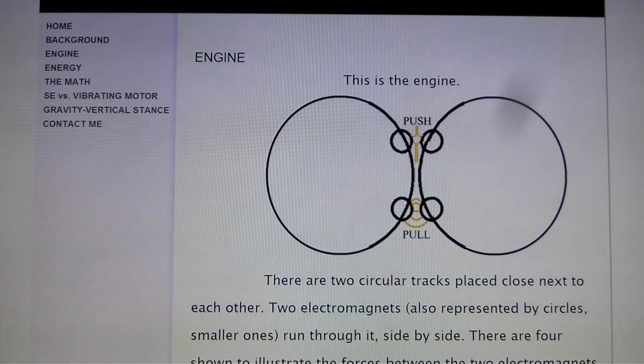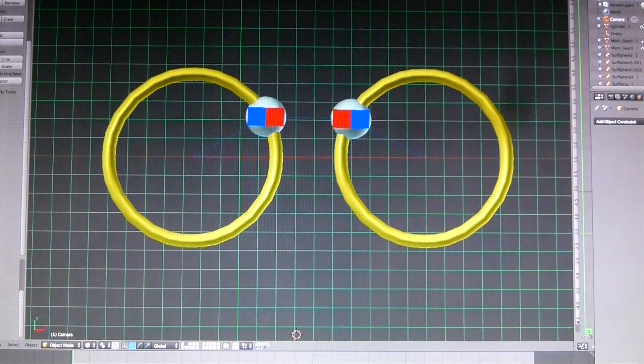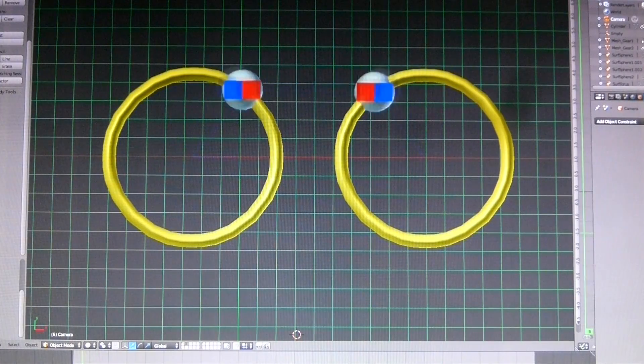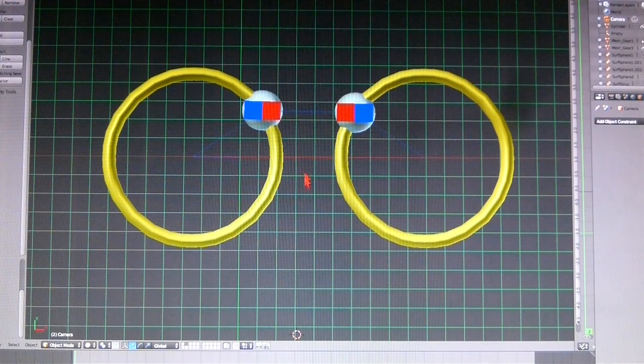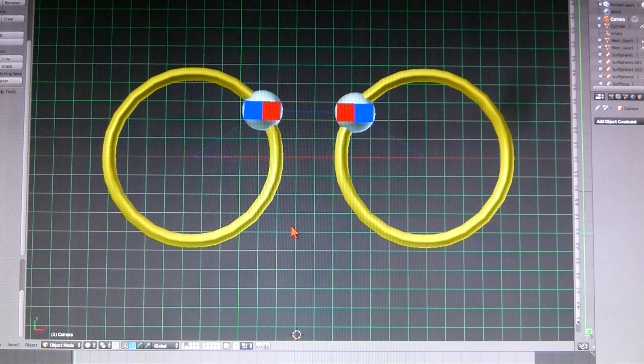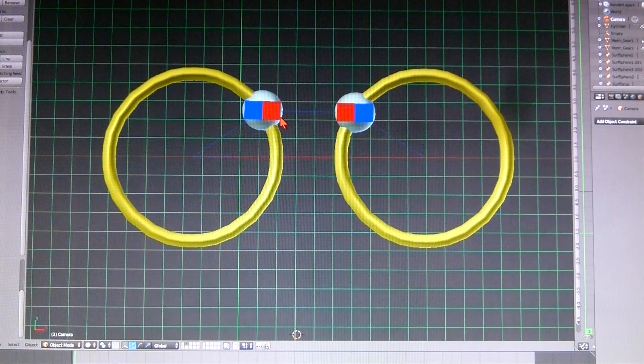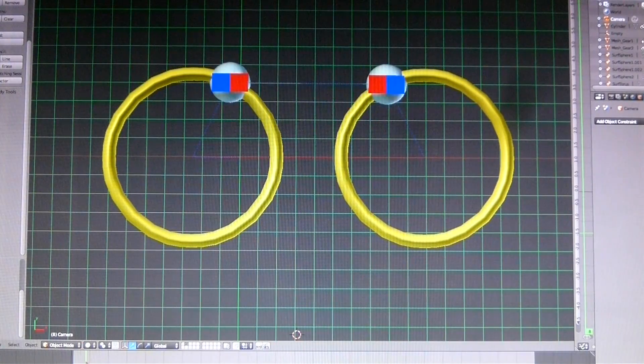To explain a bit better I've made this Blender drawing. So you see the two weights and I've drawn two magnets on it to stand in for the electromagnets he talks about. So the two magnets oppose each other which then pushes the weights around the circular track.